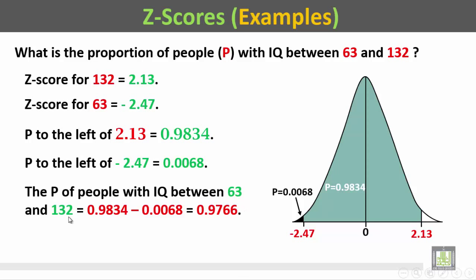So the proportion of people with IQ between 63 and 132 is equal to 0.9834 minus 0.0068, that's 0.9766. The proportion of people whose IQ is between 63 and 132 is 0.9766.